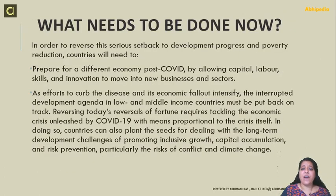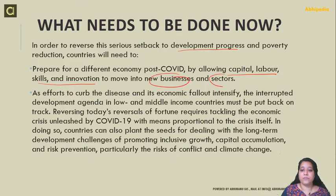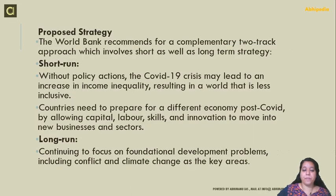What needs to be done? We have to get back to the path of development. COVID-19 has caused serious setbacks for development and poverty reduction, so countries need to take action. The World Bank has proposed a strategy called the two-track approach — a short-term as well as a long-term strategy. First, we have to ensure the flow of capital, labour, skills, and innovation so that new businesses and new sectors can emerge.